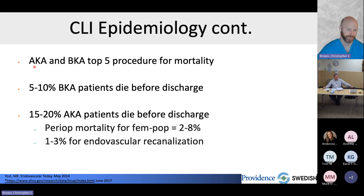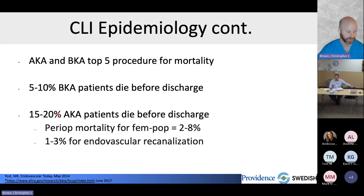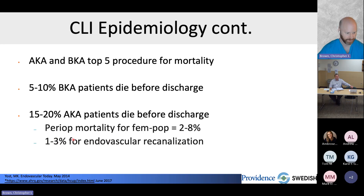Amputation is a top-five procedure for in-hospital mortality. Five to ten percent of BKA patients die before discharge; 15 to 20 percent of above-the-knee amputation patients die before discharge — comparable to mortality from septic shock with multi-organ failure. By contrast, perioperative mortality for fempop bypass is 2–8%, and 1–3% for endovascular recanalization. We can take someone facing an above-the-knee amputation, offer endovascular treatment, and reduce in-hospital mortality from 20% to 1% — a remarkable improvement in care.